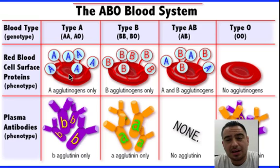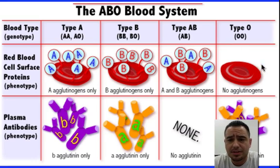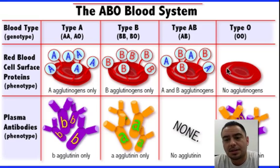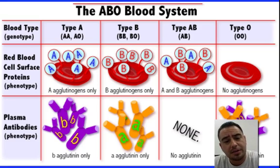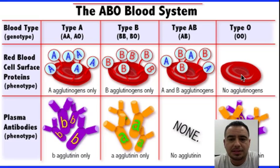What if someone with blood type A gets blood from someone with blood type O? Since there are no proteins on those cells, they go almost invisible in your body and you can use them. They won't get detected and you won't have an immune response. So the cool thing about having blood type O is you can give blood to anyone — that's a really cool thing.